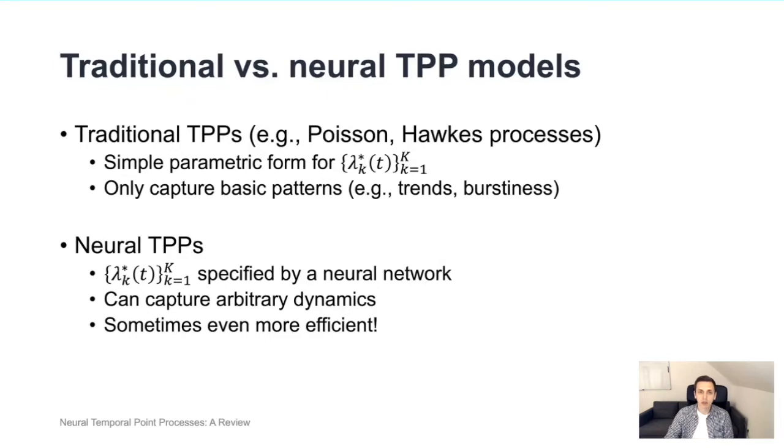Neural temporal point processes, on the other hand, model the conditional intensity function using neural networks. This allows them to model really complex interactions between different mark types and different types of interactions between the events. As another advantage, maybe somewhat surprisingly, neural temporal point processes are often even more efficient than their traditional counterparts.